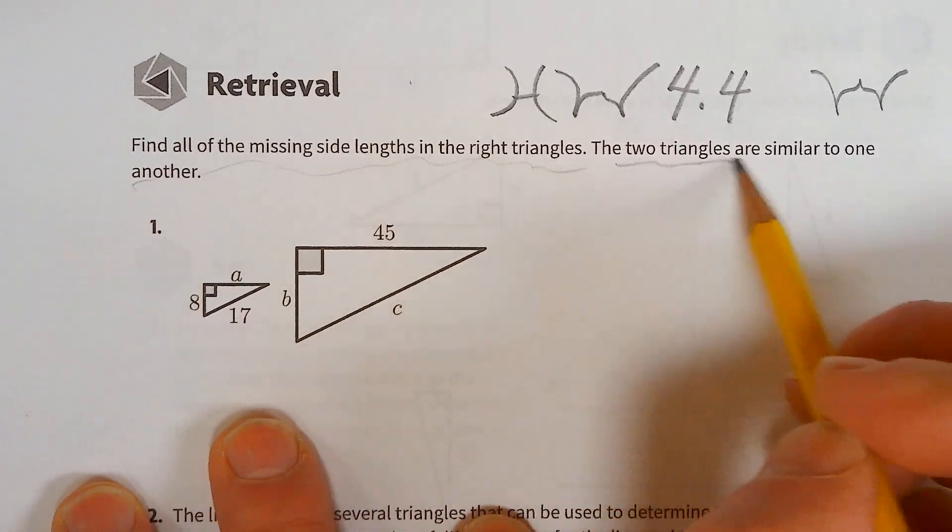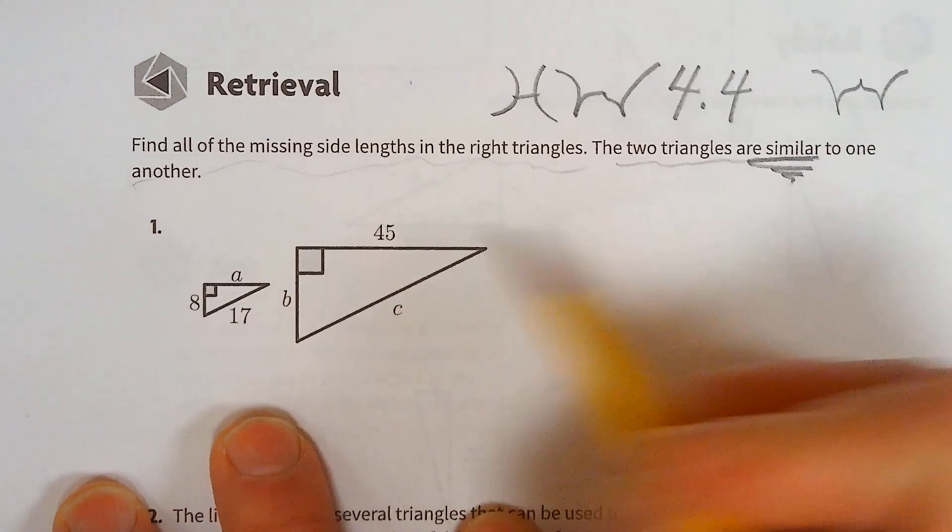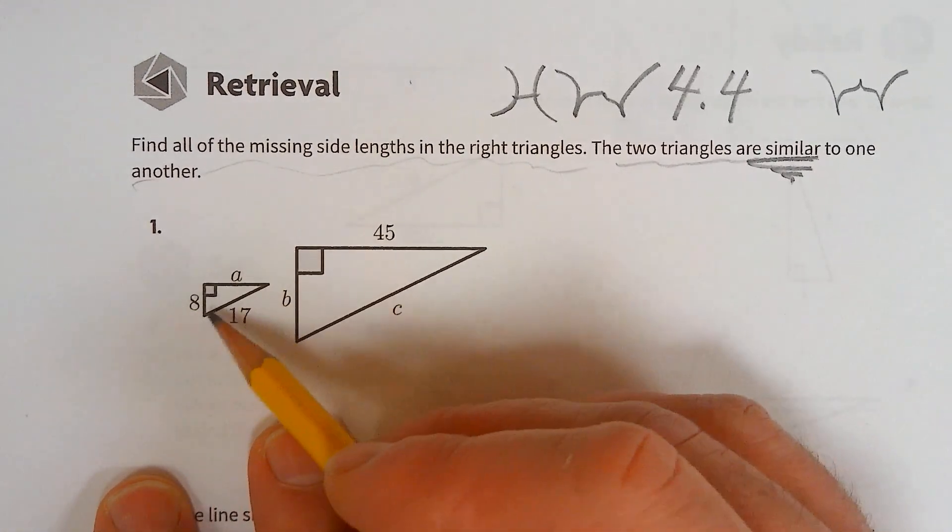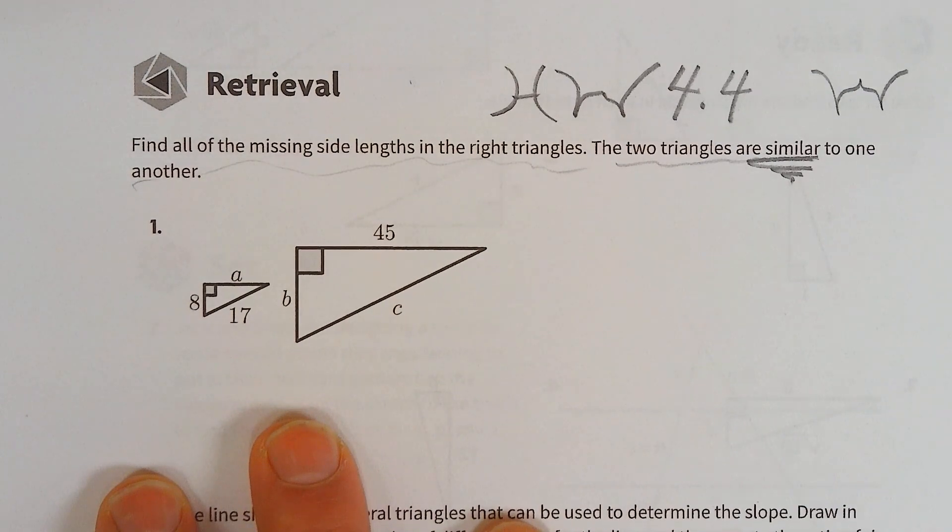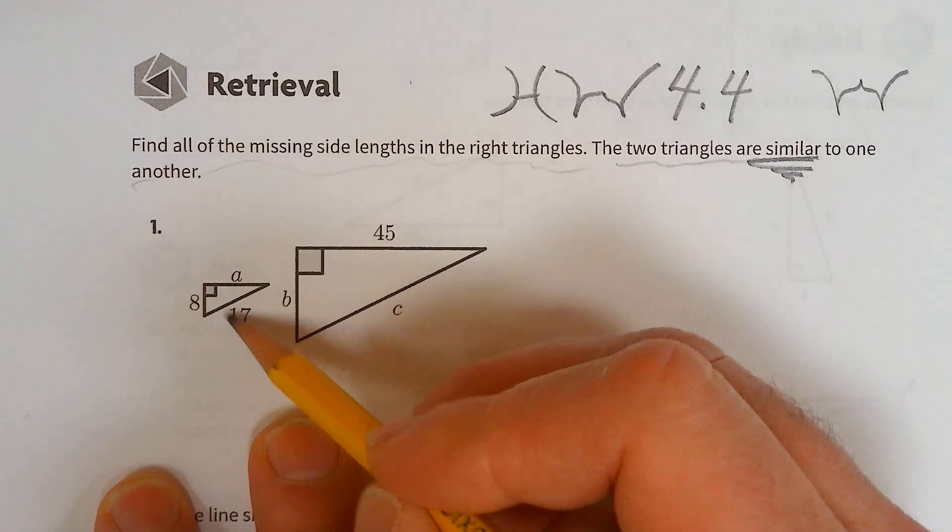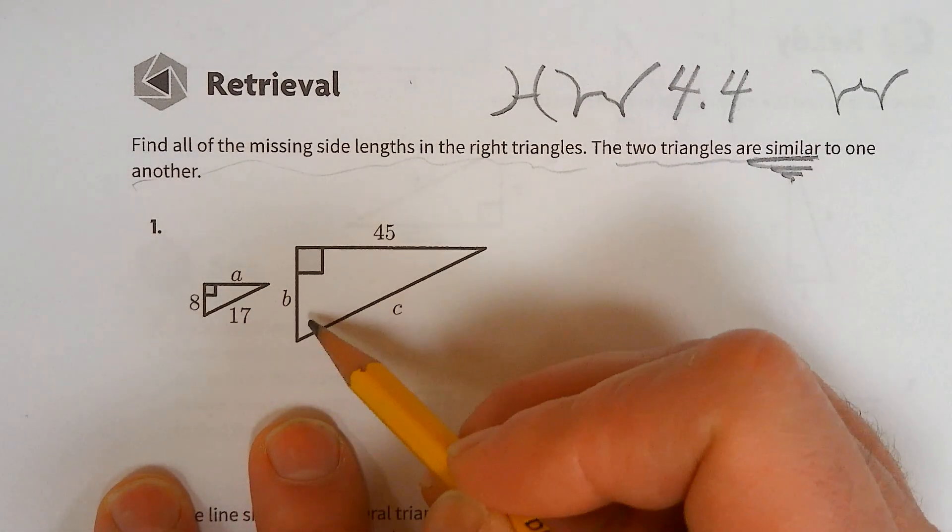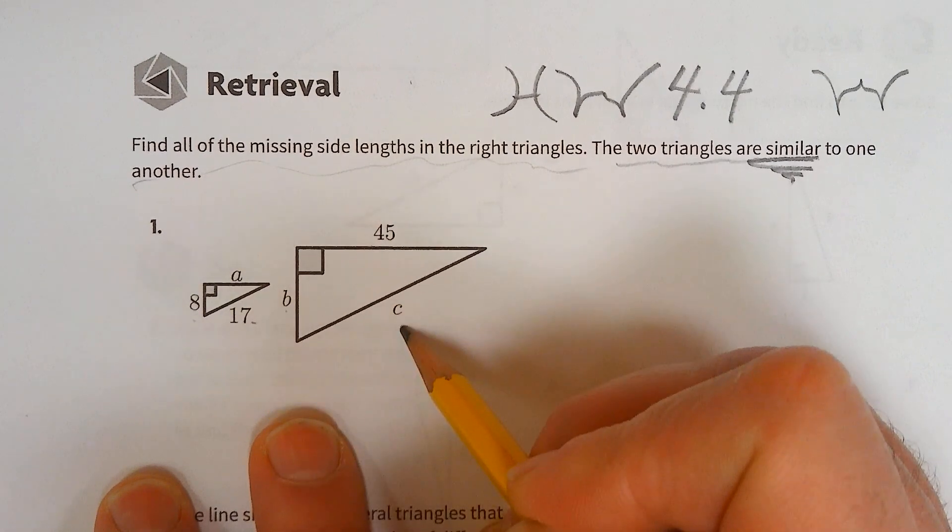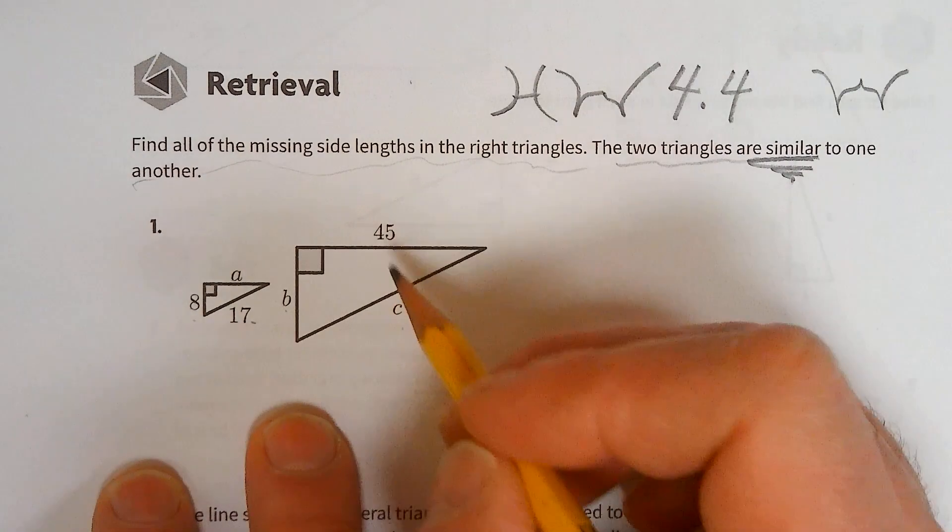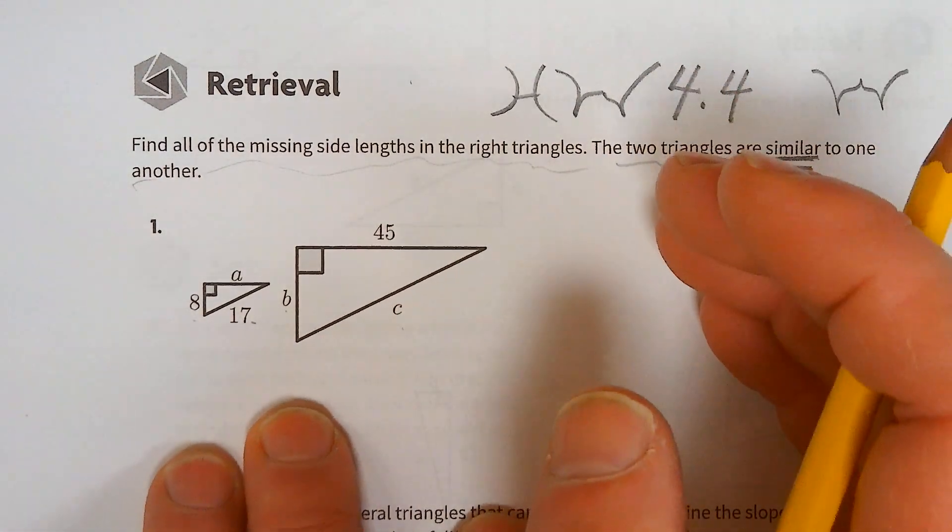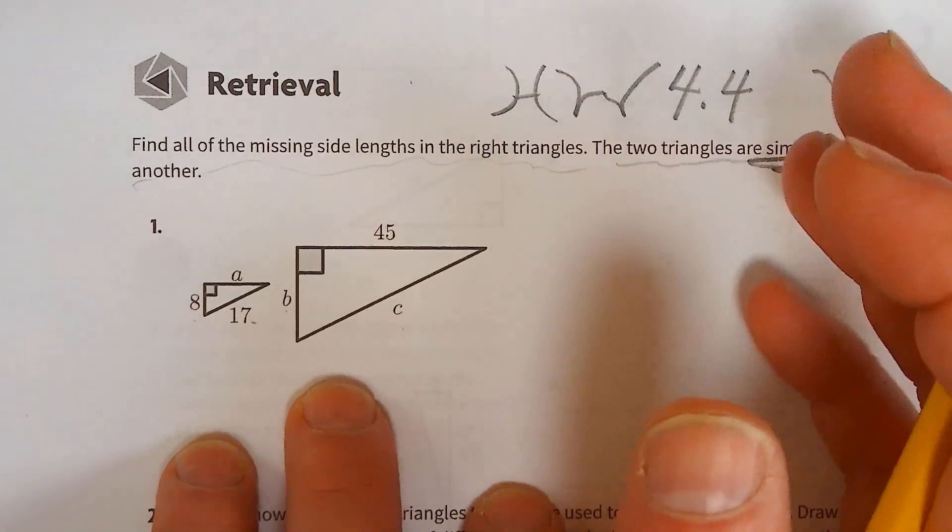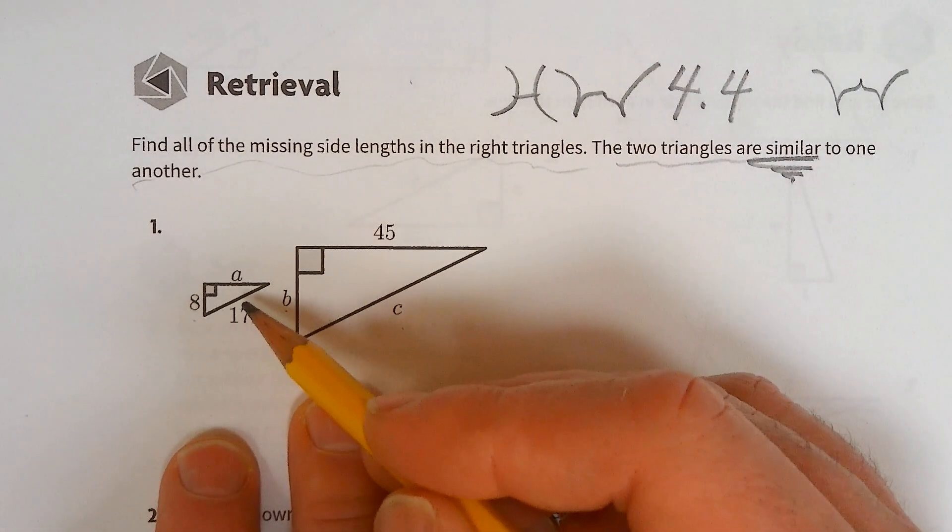Find all the missing side lengths. The two triangles are similar, so we can use proportionality. Here's a problem: 45 pairs with a, 8 pairs with b, 17 pairs with c. We don't have any comparator with two numbers - all of them have a variable. But it's a right triangle.